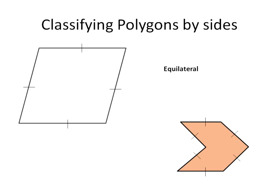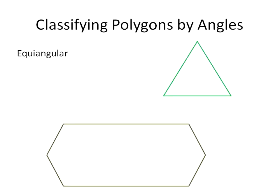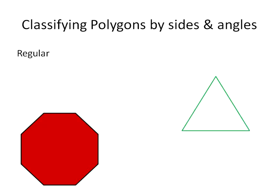So our polygons can be classified by sides. They're known as equilateral polygons if the side lengths are all the same, and equiangular polygons if the angle measurements are all the same. The third type of polygon is the type where the angle measurements are the same and the side lengths are the same. And those ones we call regular polygons.